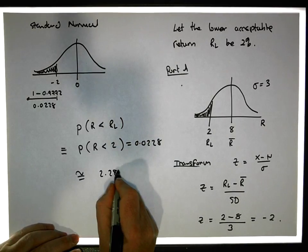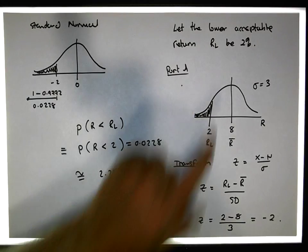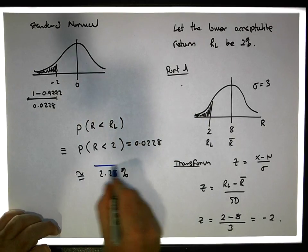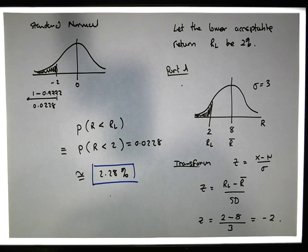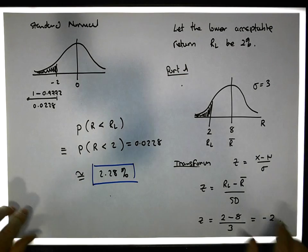So that's approximately 2.28%. So with respect to portfolio A, we would expect to see returns less than 2%, 2.28% of the time. What about with respect to portfolio B?